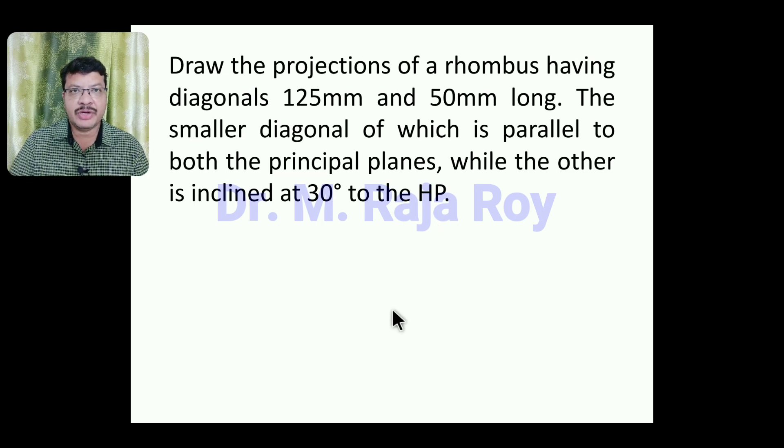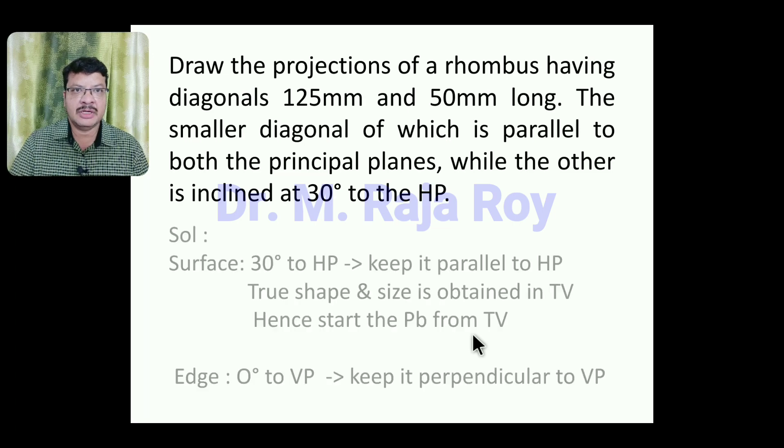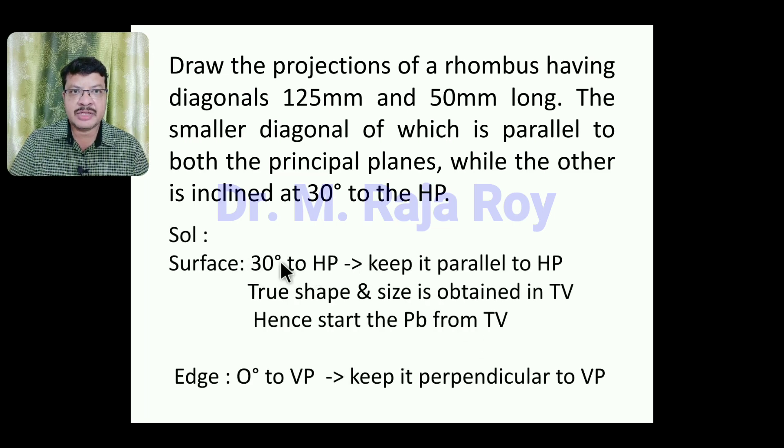For solving the planes problem, we have to extract the information such as surface inclination and edge inclination. But here, surface inclination is not given directly, but it is given indirectly. It is like this. Surface is inclined at 30 degrees to HP. But here, while the other diagonal is inclined at 30 degrees to HP, something like that, diagonal inclination is given.